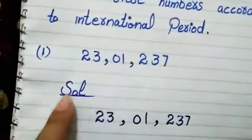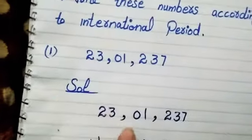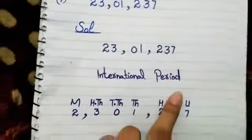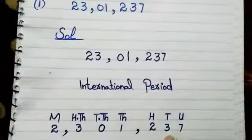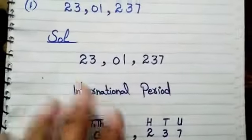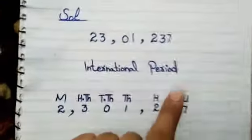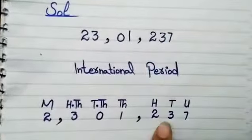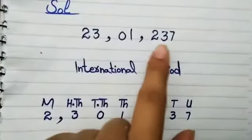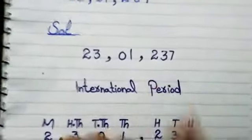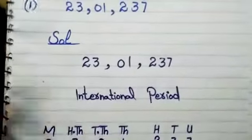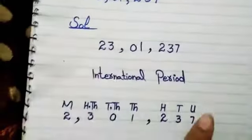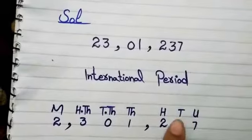Question solve. International periods — first of all we will use commas after 3 digits. Unit period: seven, three, two. The unit period will be the same in both Pakistani periods and international periods.